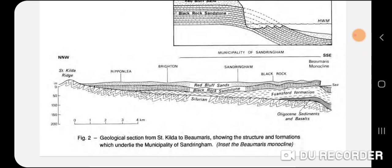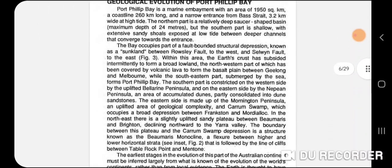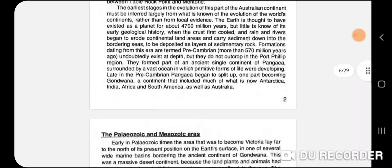Then we have a cross-section from Saint Kilda through Rip and Lee to Black Rock going inland. As you can see these formations peter out landward, meaning the Silurian is the basement rock. Because these were deposited in ocean and estuarine environments, the Saint Kilda ridge would have been the coastline in the past. We also have Oligocene sediments and basalts.